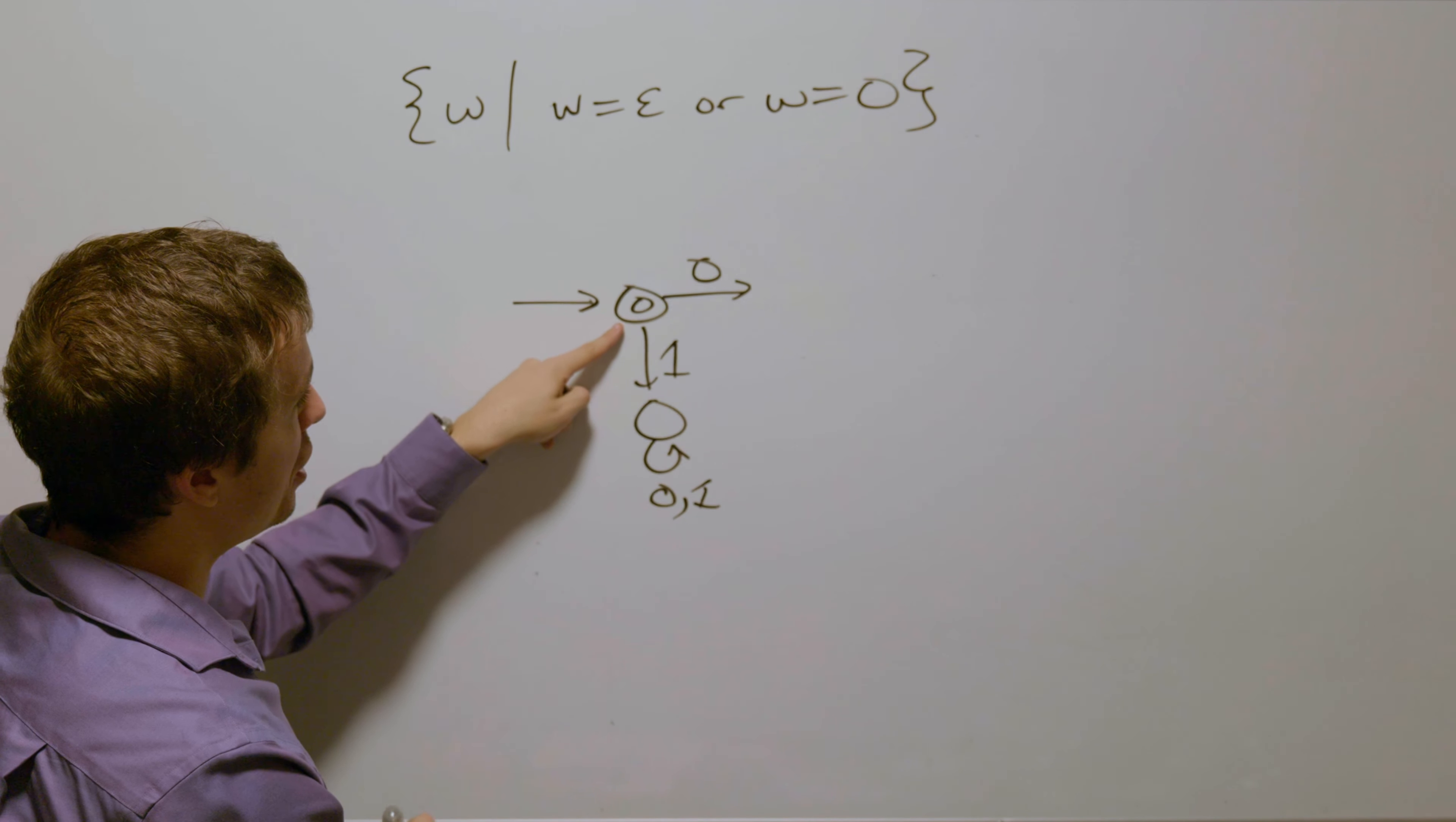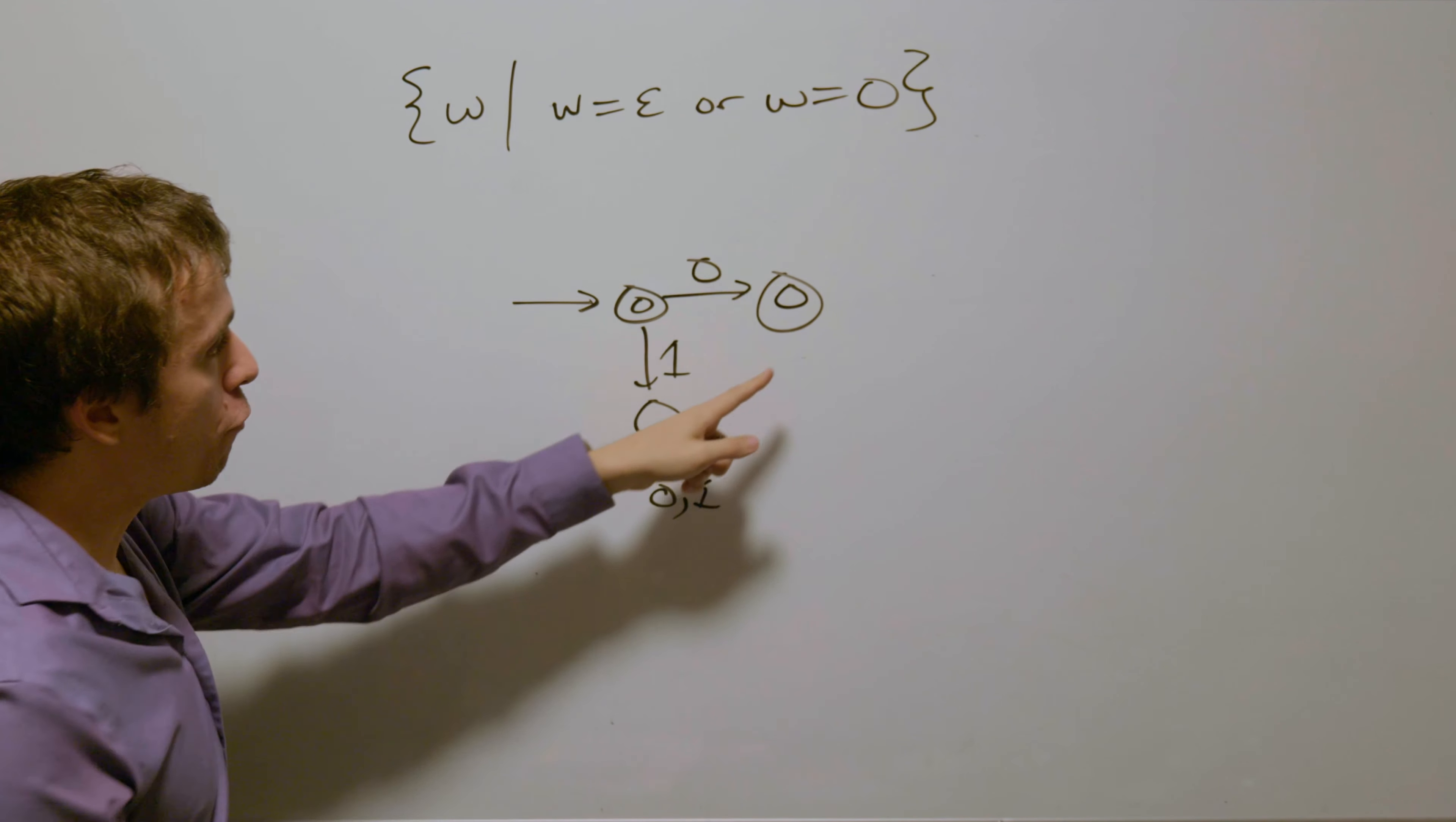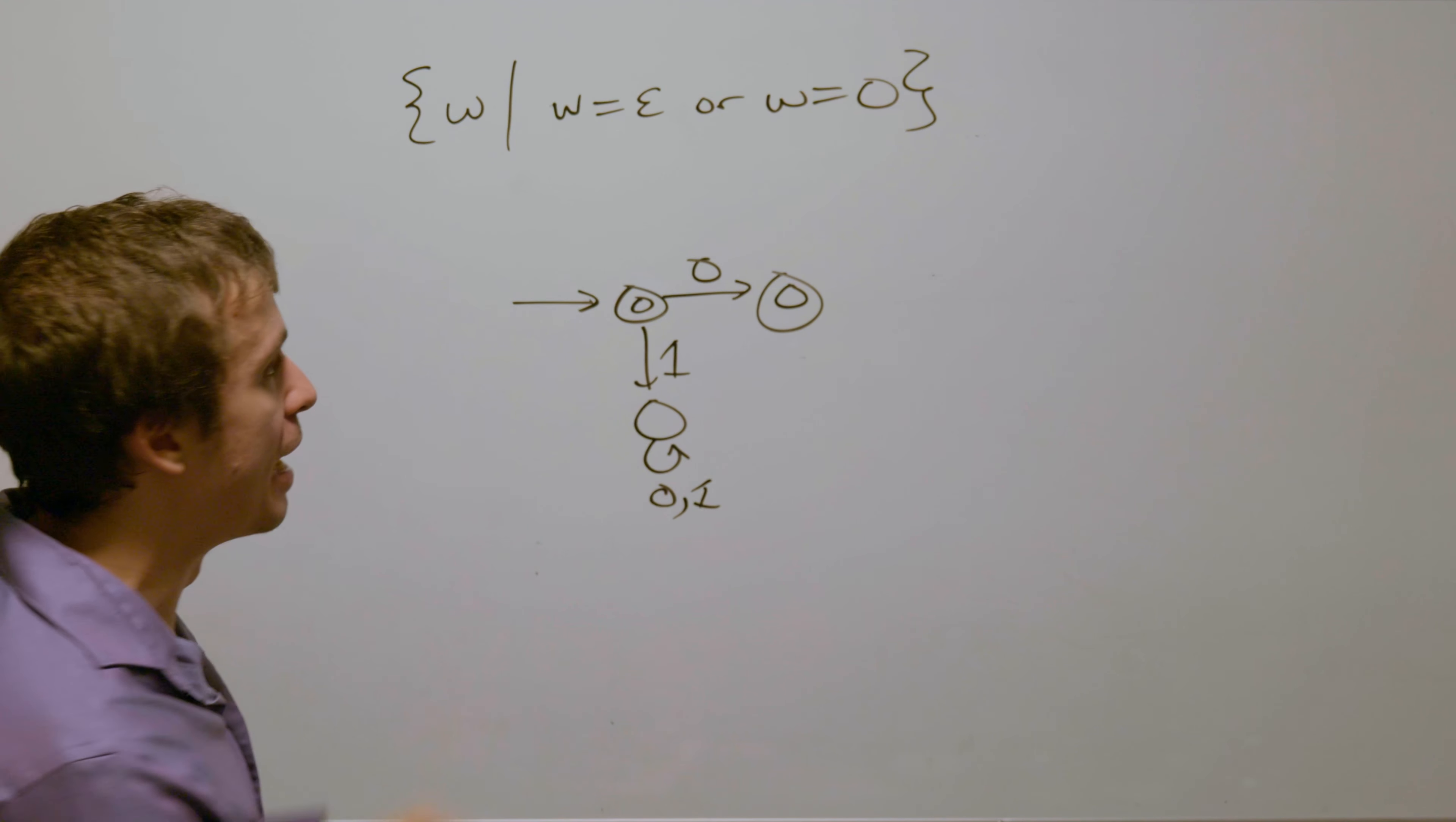So since this is the start state, we read one zero, we need to accept right there. But if we read anything else after this, we need to not accept. And we got a state for doing that.